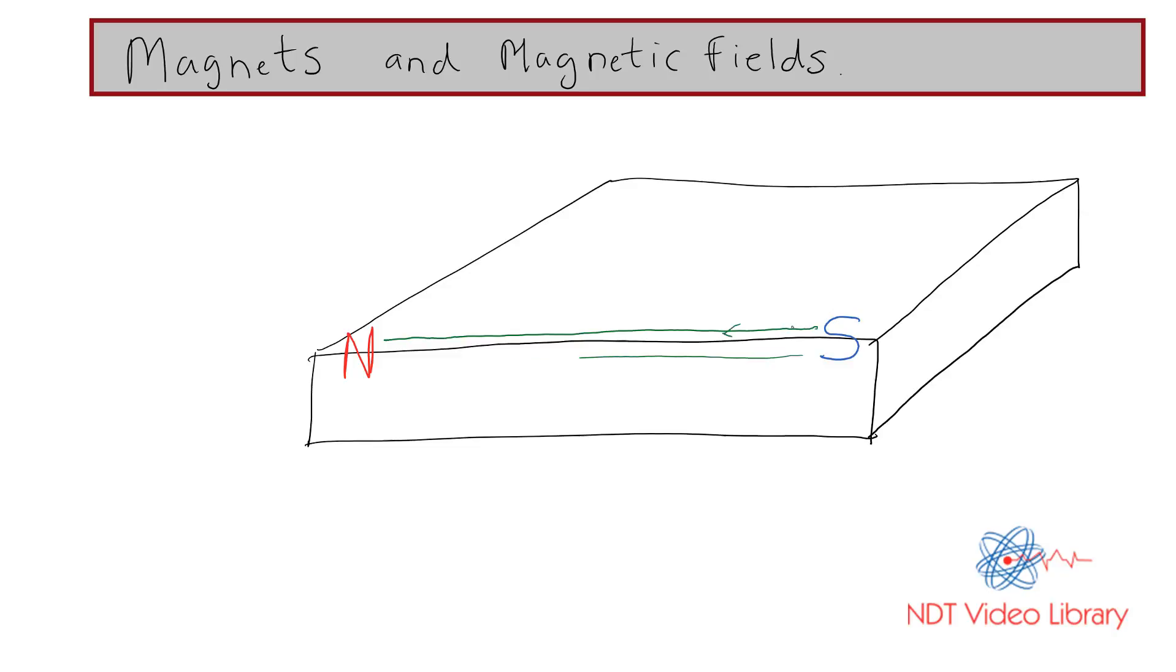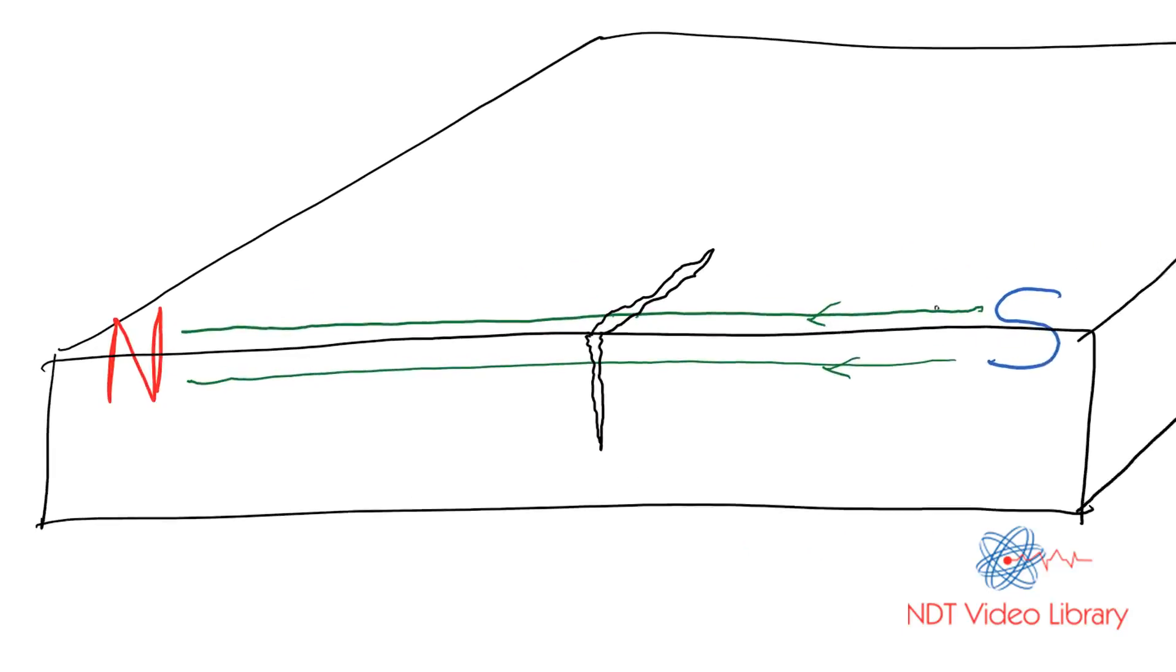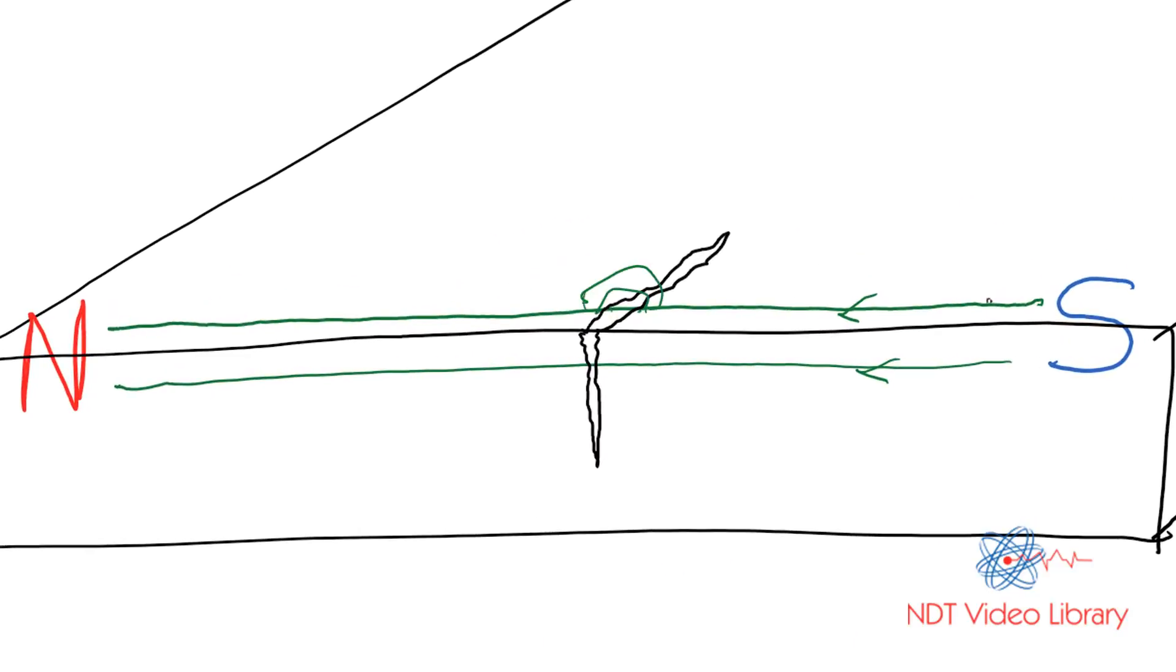In the middle, the magnetic field flows from the south to the north pole. Now consider there is a crack at the center which is not visible to the naked eye. Since there's an air gap, the magnetic force has to jump outside the crack, over the crack. As we saw earlier, two new poles will be created at the crack: north on the south side and south on the north side. As a result, two opposite poles will attract each other and also the iron particles that are sprayed in magnetic particle testing.